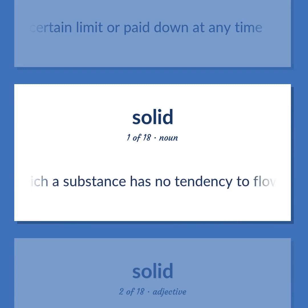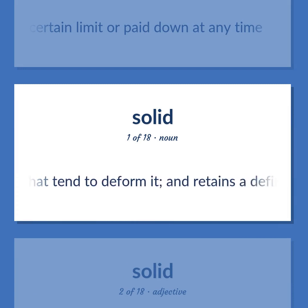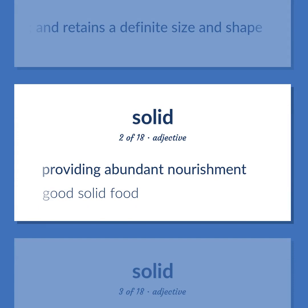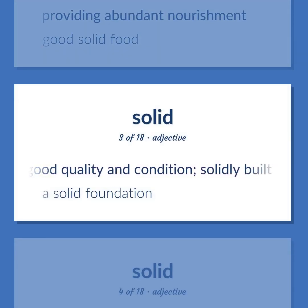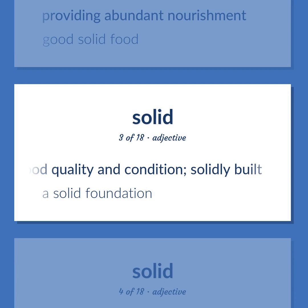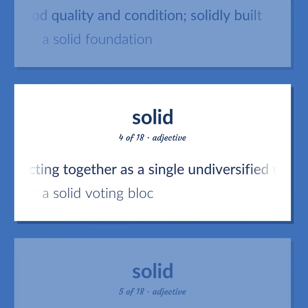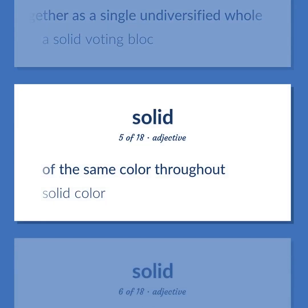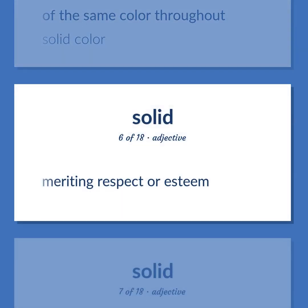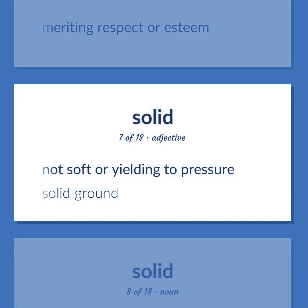Solid: The state in which a substance has no tendency to flow under moderate stress, resists forces such as compression, and retains a definite size and shape. Providing abundant nourishment — 'good solid food.' Of good quality and condition, solidly built — 'a solid foundation.' Acting together as a single undiversified whole — 'a solid voting block.' Of the same color throughout — 'solid color.' Meriting respect or esteem. Not soft or yielding to pressure — 'solid ground.'